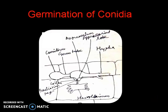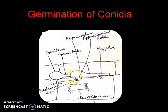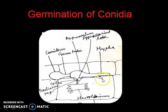When the conidium falls on a suitable surface, it will germinate and send a germ tube, as you can see in the diagram. The germ tube will have a swollen appearance and will form an appressorium and an appressorial lobe. This appressorial lobe will actually penetrate inside the host cell and form a haustorium. The appressorium will further form a hypha, which will start growing normally and sending its haustoria at intervals into the host tissue.